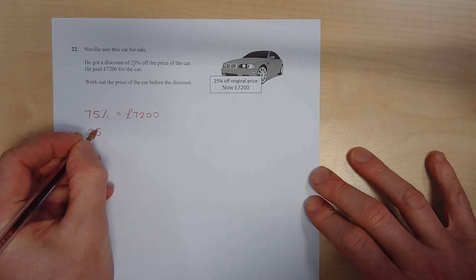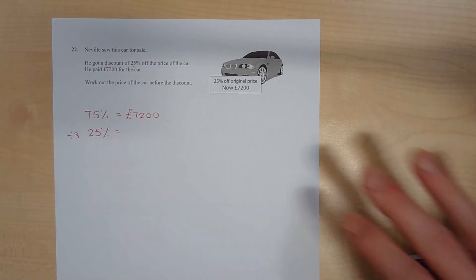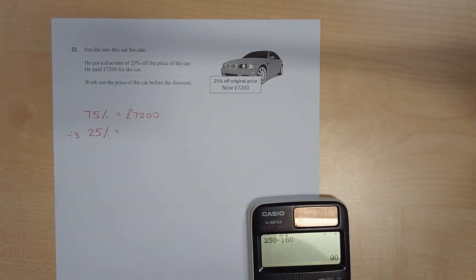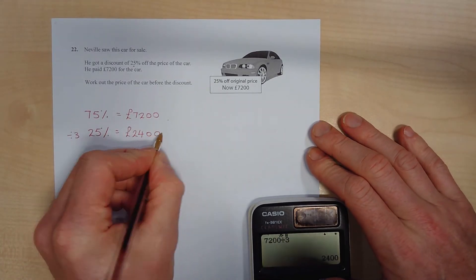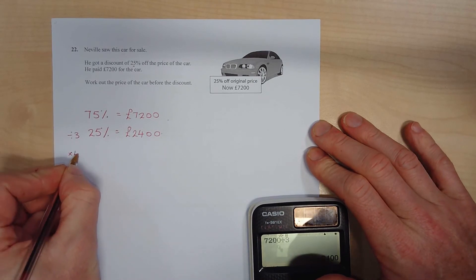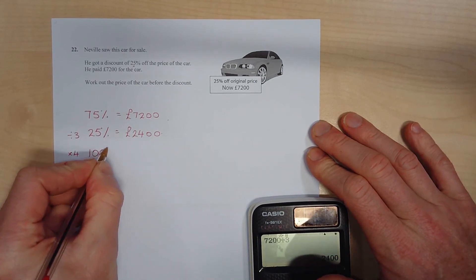If it's had 25% taken off it, we know that 75% of the value is worth £7,200, and we can use this fact to go and work out 100%. So I'm going to divide this by 3 and I get 25%, and I've got my calculator, so 7,200 divided by 3 is 2,400.